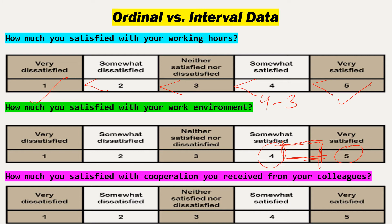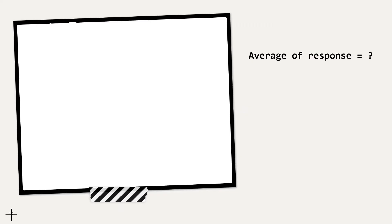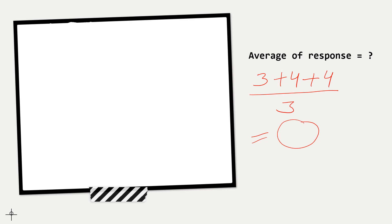For example, if this Likert scale is given to you and you checked number 3 for working hours, number 4 for work environment, and number 4 for cooperation from colleagues — if I want to find the average of your responses, I can calculate the mean (3+4+4), but is that number meaningful? No, because we are adding different categories such as somewhat satisfied to very satisfied. Addition, subtraction, or finding mean and standard deviation is not possible with ordinal data — it does not have any meaning.